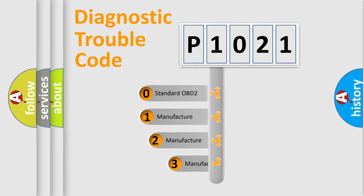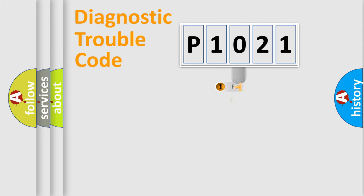If the second character is expressed as zero, it is a standardized error. In the case of numbers 1, 2, or 3, it is a more precise expression of a car-specific error.